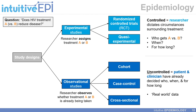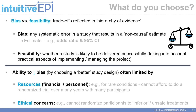In terms of observational studies, we have cohort studies, case-control studies, and cross-sectional studies. These studies are uncontrolled because the patient and the clinician have already decided who, when, and for how long with respect to the exposure. So which study design do you choose? This can be broken down into a bias versus feasibility trade-off, and these trade-offs are reflected in a hierarchy of evidence.